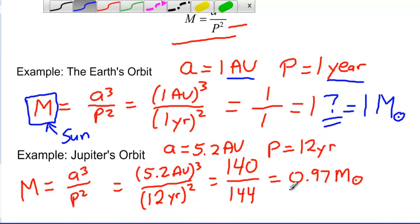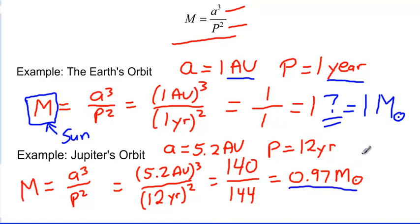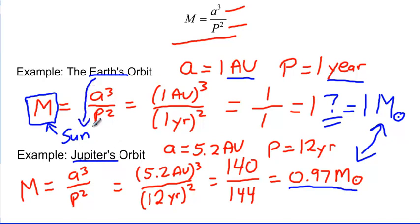These two results are essentially the same — and that makes sense, because both the Earth and Jupiter are orbiting the Sun. We're looking for the mass of the Sun in both cases, so it should come out the same. If we did this for any other planet in the solar system, we would get the same number. Now let's look at something different — a binary star system.